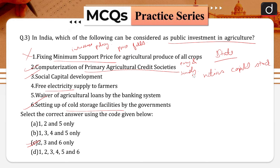Cold storage facilities are commonly built to store perishable goods for a period of time. The government does not set up cold storage of its own but is implementing various schemes under which financial assistance is provided for setting up of cold storage for storage of agricultural produce including perishable horticulture produce throughout the country. Therefore, the sixth statement is also correct.